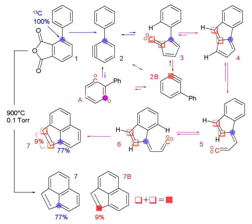Nuclear magnetic resonance and mass spectrometry are used to investigate the mechanisms of chemical reactions. NMR and MS detect isotopic differences, which allows information about the position of labeled atoms in the product's structure to be determined. With this information, the reaction pathway the initial metabolites utilize to convert into the products can be determined.